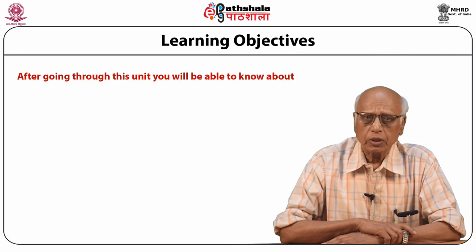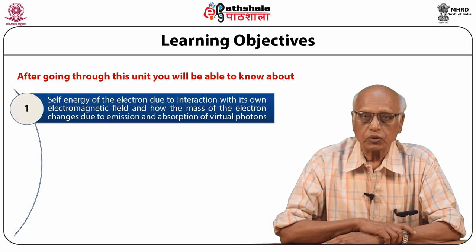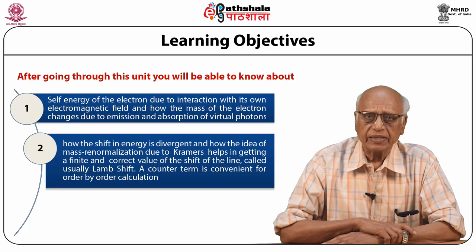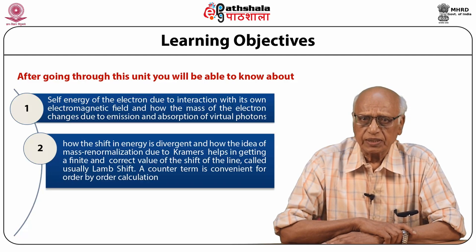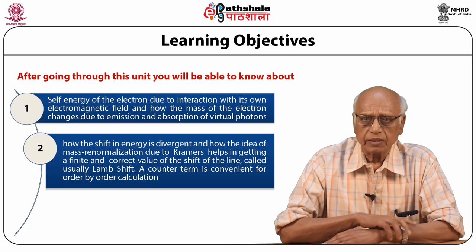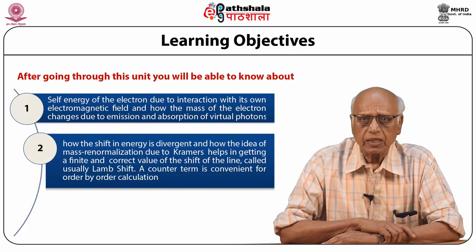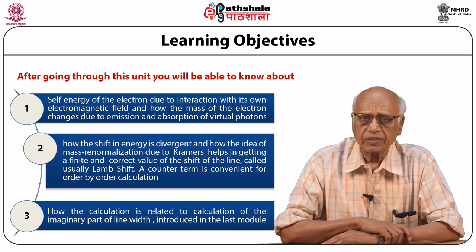After going through the module you will be able to know about self-energy of the electron due to interaction with its own electromagnetic field and how the mass of the electron changes due to emission and absorption of virtual photons. You will learn how the shift in energy is divergent and how the idea of mass renormalization due to Kramer's helps in getting a finite and correct value of the shift of the line, called usually Lamb shift. A counter term is convenient for order by order calculation. You will also see how the calculation is related to calculation of the imaginary part of the line width introduced in the last module.